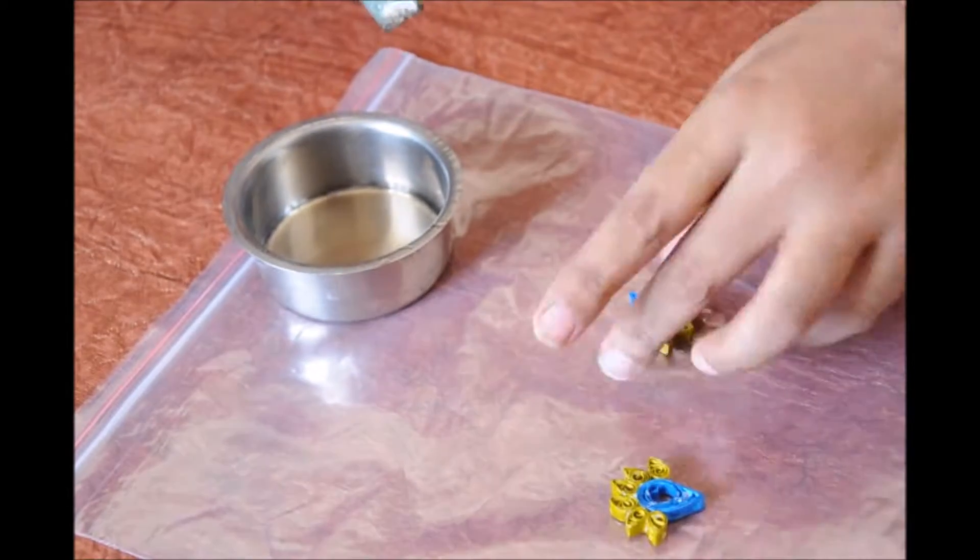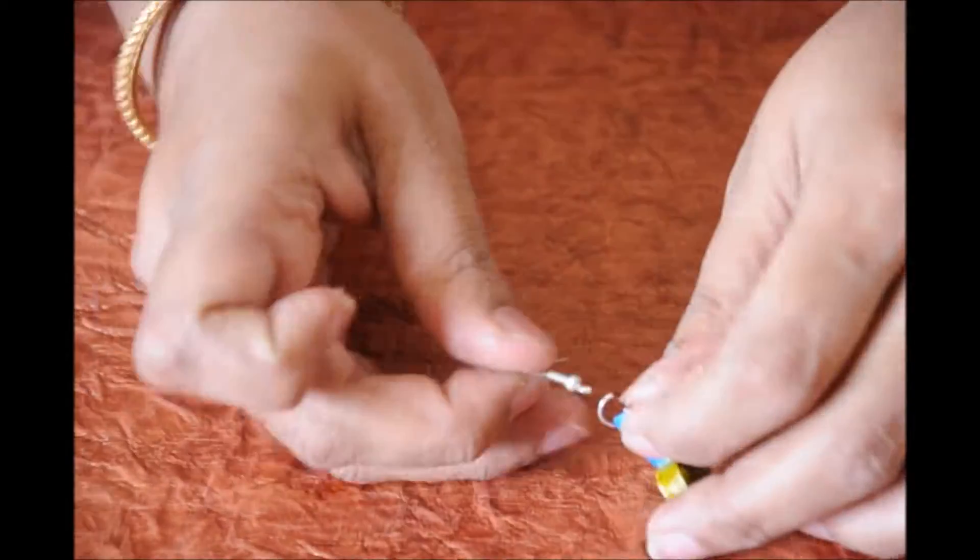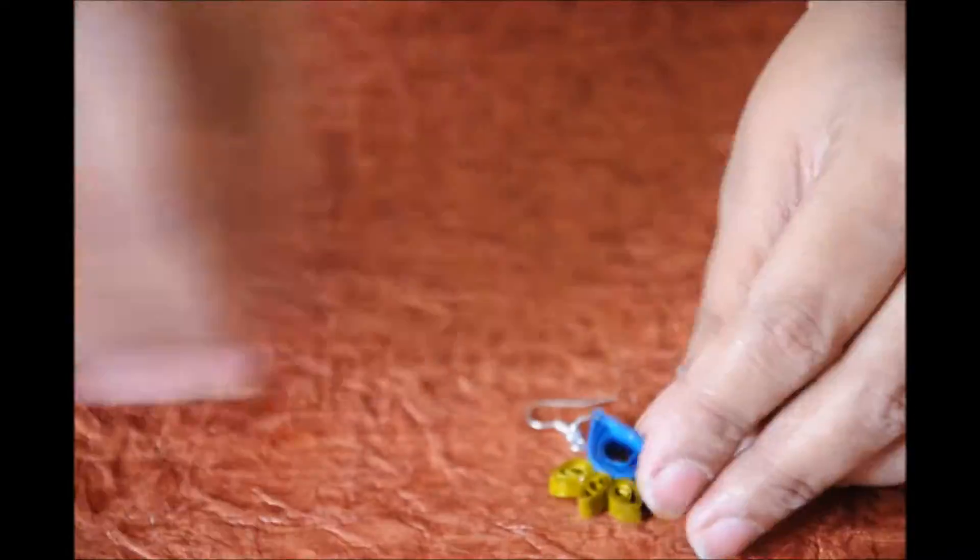Spread it all throughout evenly. The beautiful earrings are ready. After it dries, open the loop and insert it, then put the hook on the top.